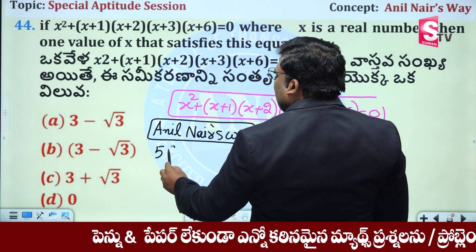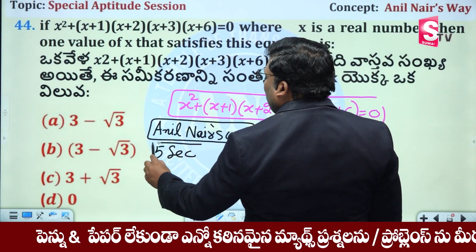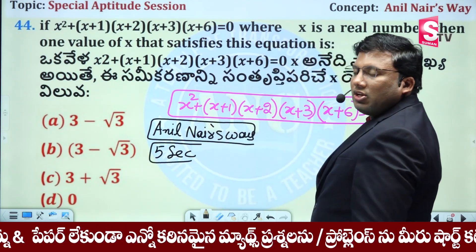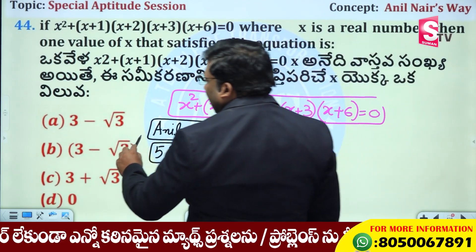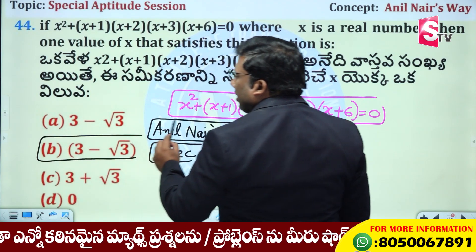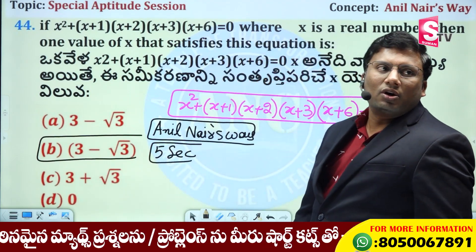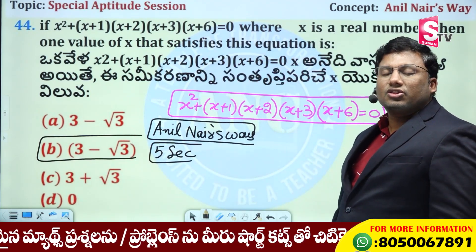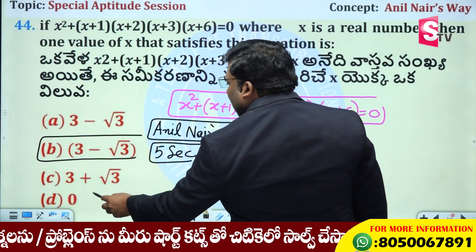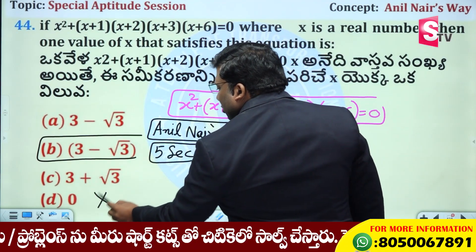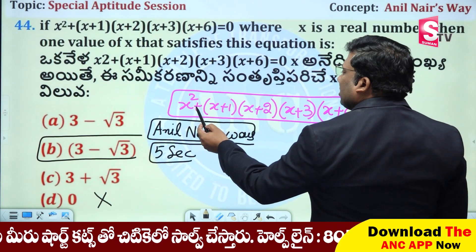Generally, what teachers say is to open and solve it the long way. But we will solve it in 5 seconds. Write 3 minus root 3. It is not 0 — it is not 0.